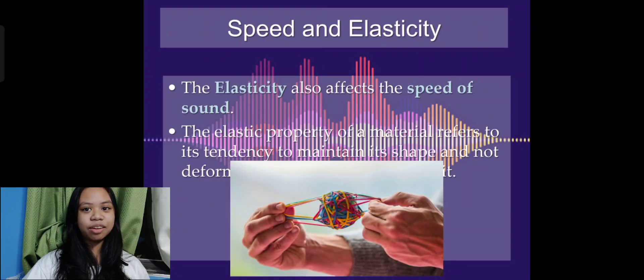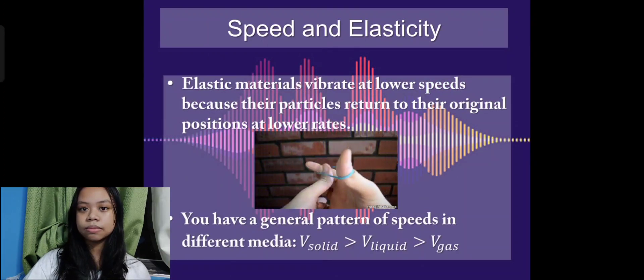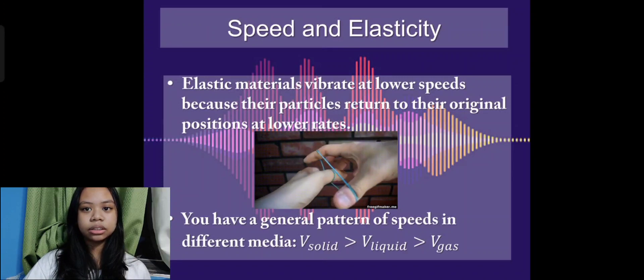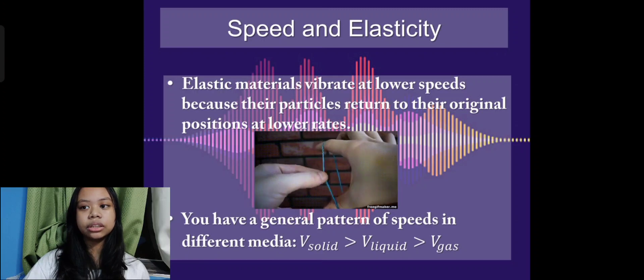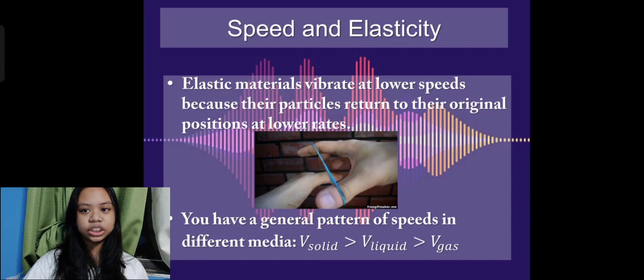The elasticity also affects the speed of sound. The elastic property of a material refers to its tendency to maintain its shape and not deform when a force is applied to it. Rigid materials such as steel will experience a smaller deformation than rubber when a force is applied to it because rubber is more flexible. Elastic materials vibrate at lower speed because their particles return to the original position at lower rates. Sound travels very slowly in elastic materials than rigid materials.